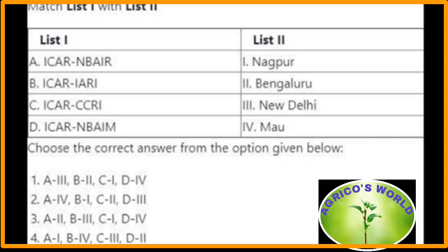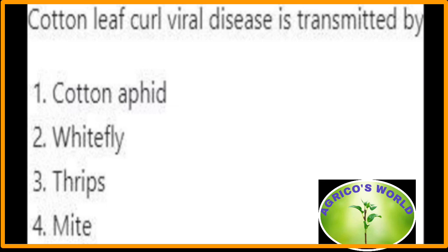ICAR-NBAIM — National Bureau of Agriculturally Important Microorganisms — is located at Mau. Cotton leaf curl viral disease is transmitted by whiteflies; whiteflies transmit the cotton leaf curl viral disease.